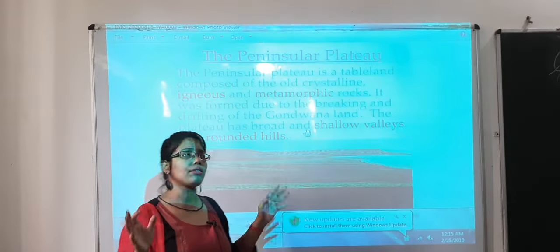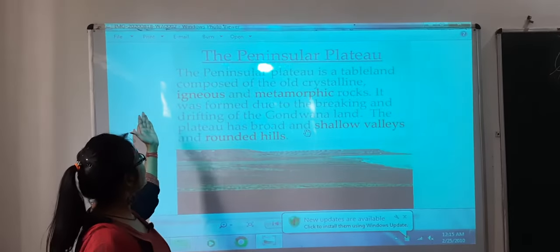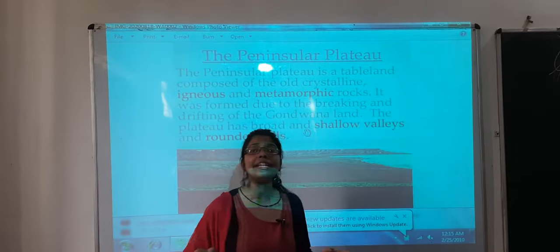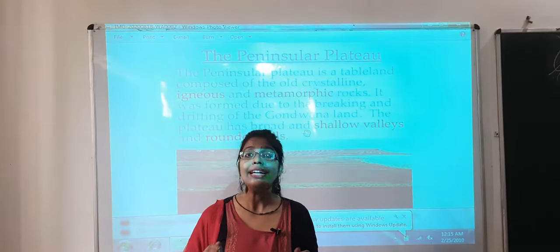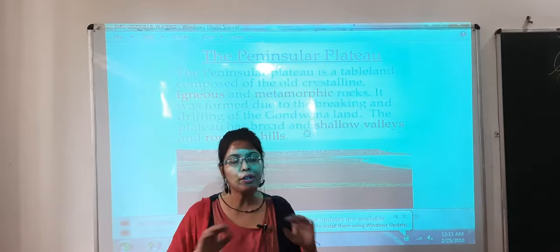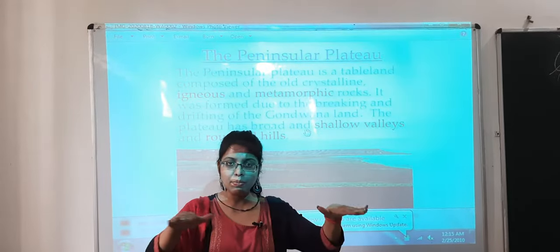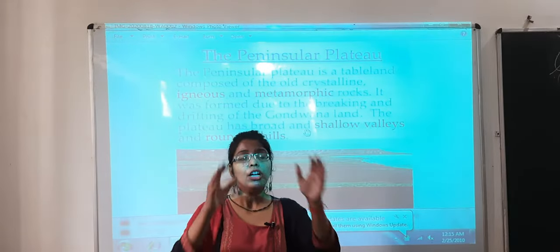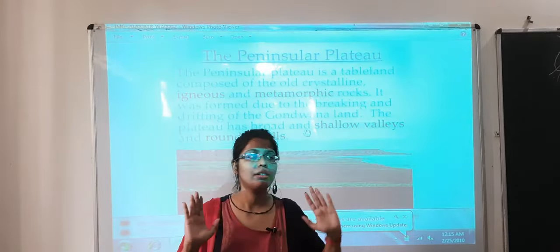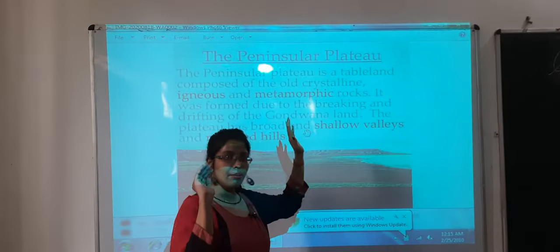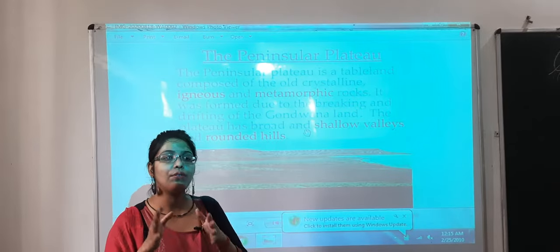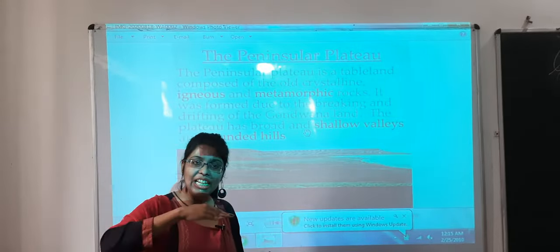Now, what is a plateau? The peninsular plateau is a tableland. A tableland-like structure is known as a plateau. It is not a plain surface — it is basically elevated. Just like a table you have seen, the surface is plain but elevated on four legs. That elevated tableland-like structure is known as a plateau — in Hindi we call it 'pathar'. Peninsular refers to a landmass covered by water from three sides, and a plateau is an elevated tableland-like structure.